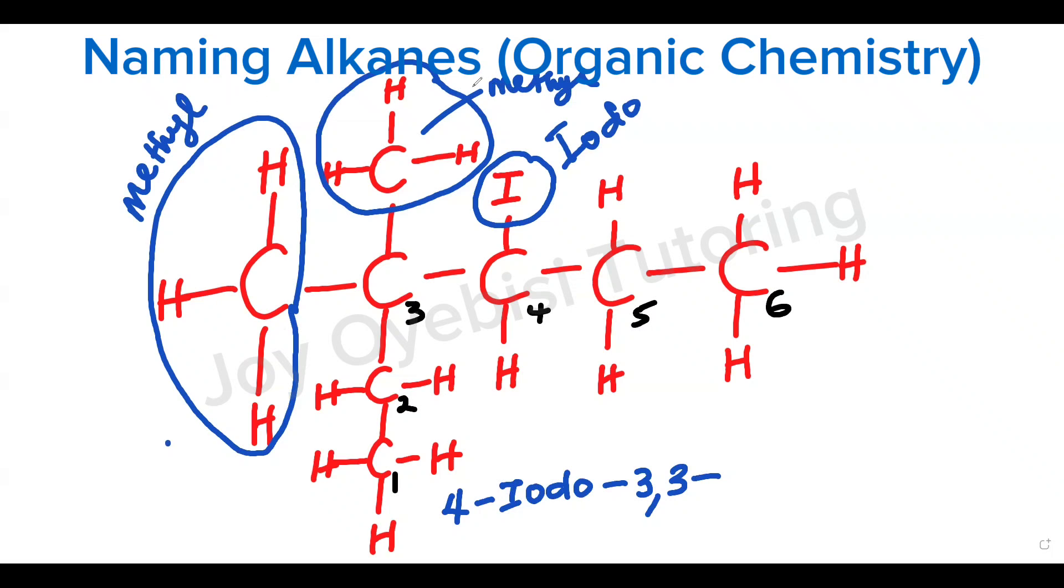These methyl groups, because they're the same, you can't just say methyl, methyl. We use a prefix for multiple identical substituents. So because you have two of them, I'm going to say dimethyl. Di represents two. So it's just telling us that on this carbon three, there are two methyl groups attached.